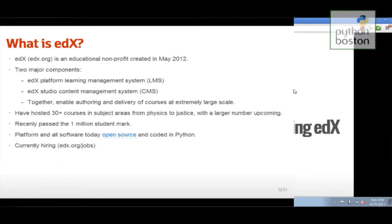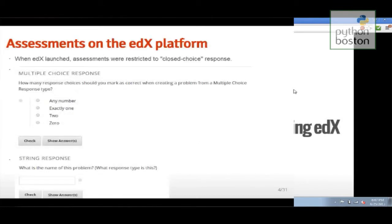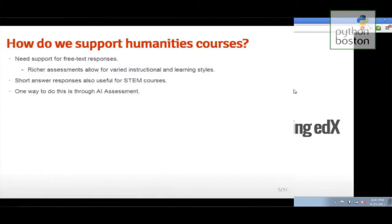So when edX launched all of a year ago, we were restricted to what I like to call closed choice responses. So these are basically questions where you have a list of options. You have to pick one, the traditional multiple choice, and also things where a teacher says, this is the answer and a student has to enter that exact answer or they're wrong. And as we all know, as we all went through high school, we know that these are not always the things that are used to teach all subjects. Sometimes a teacher just wants to give you an essay. Sometimes the teaching of a particular class requires a short answer. And edX needed to develop ways to do this.